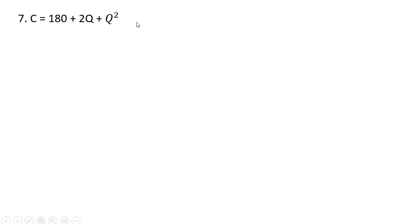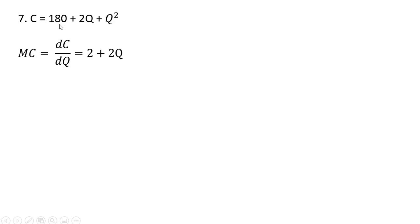Here we have a cost equation. The marginal cost is going to be given by 2 plus 2q. The derivative of 180 is a constant, so it's 0. The derivative of 2q is just 2, and the derivative of q squared, as we saw, is 2q.